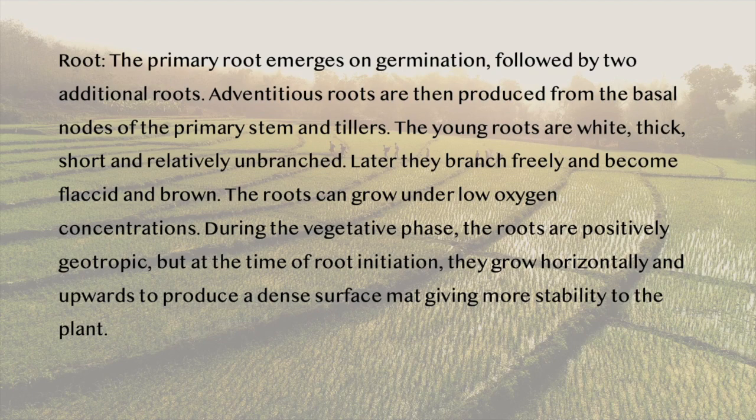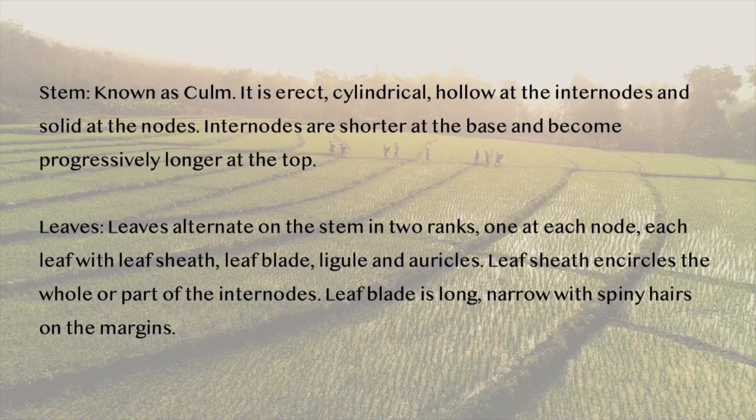During the vegetative phase, the roots are positively geotropic. But at the time of root initiation, they grow horizontally and upwards to produce a dense surface mat, giving more stability to the plant. The stem is erect, cylindrical, hollow at the internodes and solid at the nodes. Internodes are shorter at the base and become progressively longer at the top.